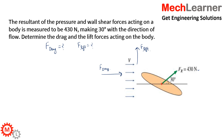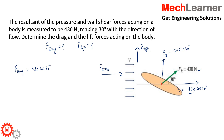We take the X and Y components of this resultant vector. The X component is 430 cos 30°, and the Y component is 430 sin 30°. The drag force, acting in the X direction, is 430 cos 30° = 372.4 N. The lift force, acting in the Y direction, is 430 sin 30° = 430/2 = 215 N.